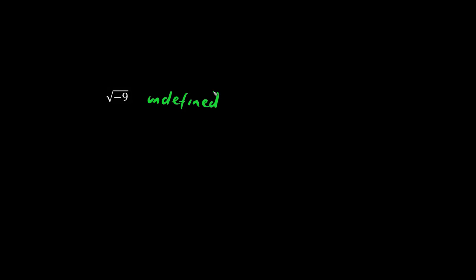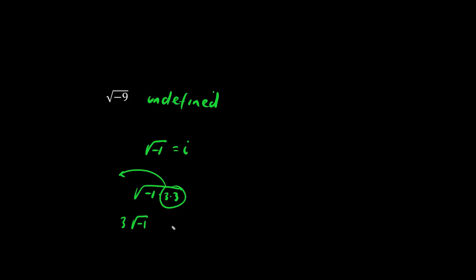What is the square root of negative 9? The answer is undefined. Technically, the square root of negative 1 is i, so we have negative 1 times 3 times 3 — the two 3's break out, giving you 3 times the square root of negative 1, which is 3i. But this is not part of the BC math curriculum.